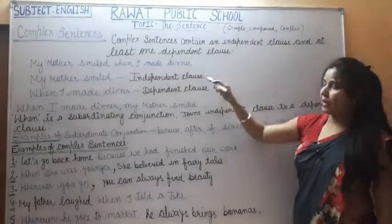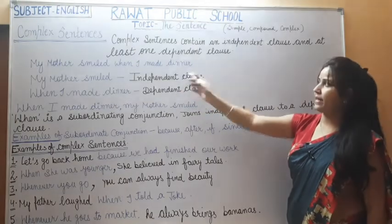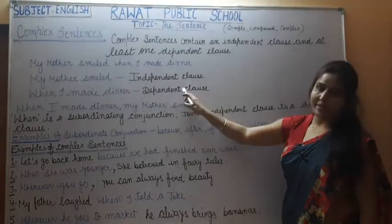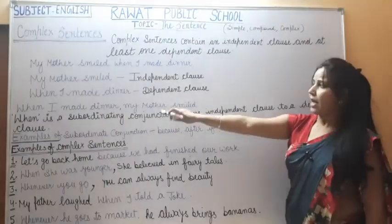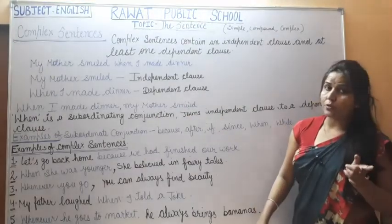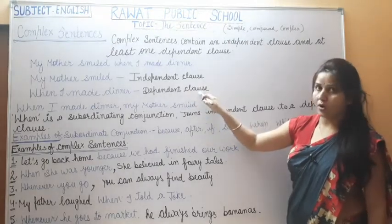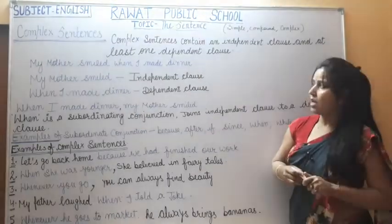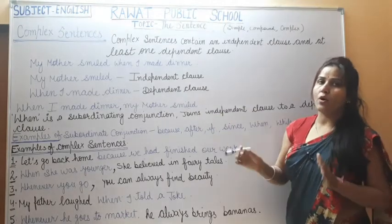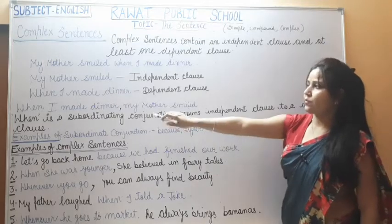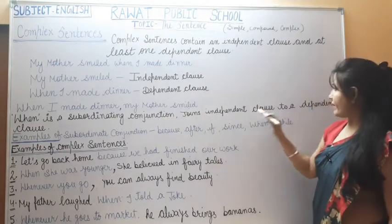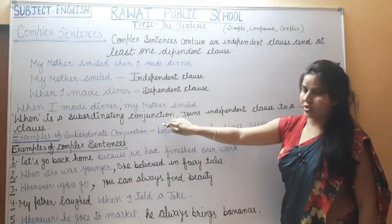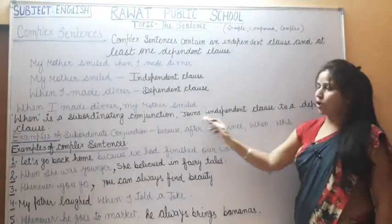We can also change the position of the clauses. If we write the dependent clause first — 'When I made dinner, my mother smiled' — according to the rules, after writing the dependent clause first we must put a comma. 'When' is a subordinate conjunction that joins the independent clause to the dependent clause.